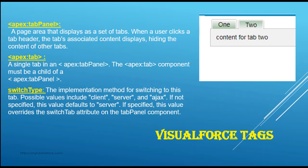Now what is this tab panel? Tab panel is an area where you're going to specify your tabs. Let's say this is a tab panel and on the tab panel, you're going to have multiple tabs. According to the definition, a page area that displays a set of tabs.